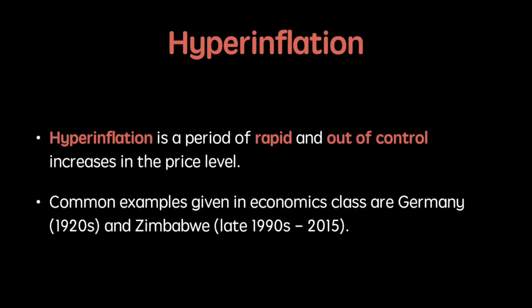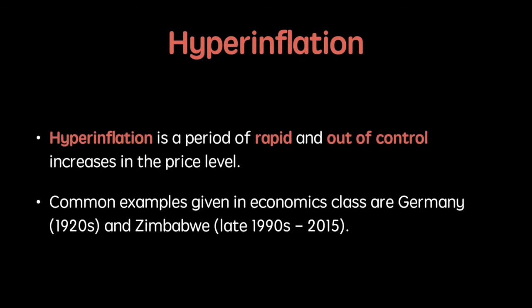When inflation is rising at a rapid rate, it is called hyperinflation. This concept explains why a billionaire in Zimbabwe would be starving in 2012. Hyperinflation is a period of rapid and out-of-control increases in the price level. Common examples given in economics class are 1920s Germany and Zimbabwe from the late 90s to 2015.